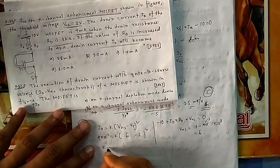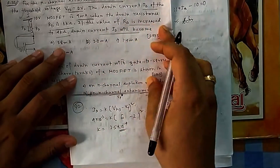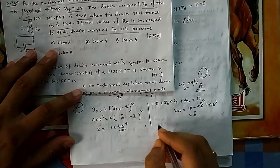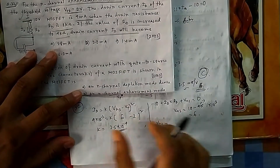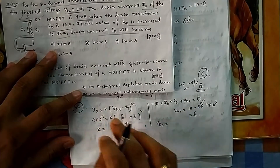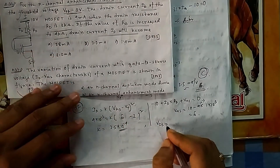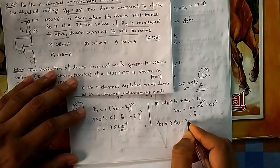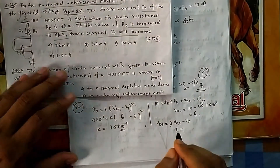Now verify that saturation was correct: V_DS must be ≥ V_GS − V_T. Since drain and gate are shorted, V_DS = V_GS = 6 V. And V_GS − V_T = 6 − 2 = 4 V. Since 6 ≥ 4, saturation is confirmed.